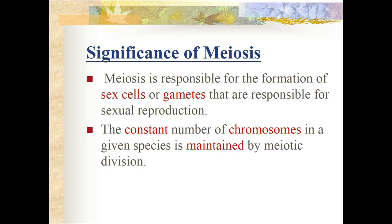Significance of meiosis: meiosis is responsible for the formation of sex cells or gametes for sexual reproduction. The constant chromosome number of a given species is maintained by meiotic division - during fertilization, the N chromosomes from the mother and N chromosomes from the father fuse to form the zygote, regaining the 2N number and maintaining the species' constant chromosome count.